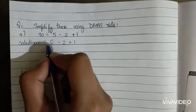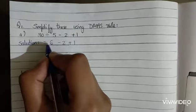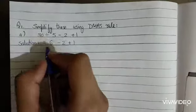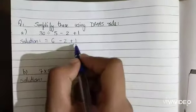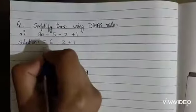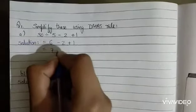Jis number ke aage koi bhi symbol nahi hota hai, usse hum plus consider karte hai. So we will add 6 plus 1. 6 plus 1 is 7, minus 2.